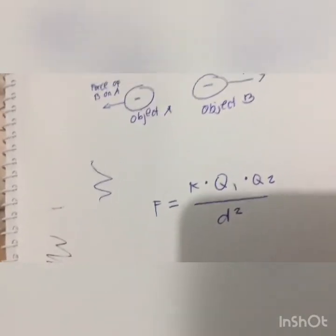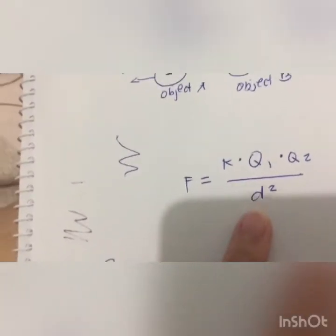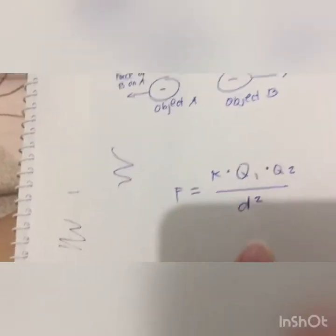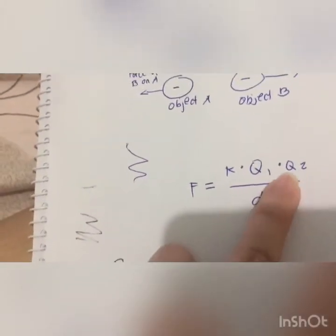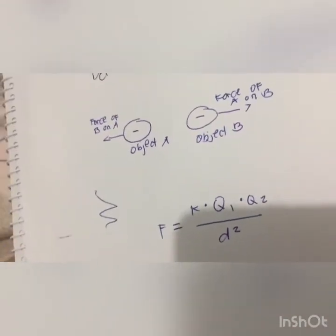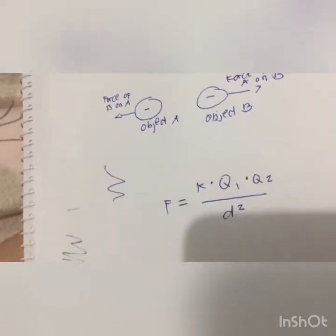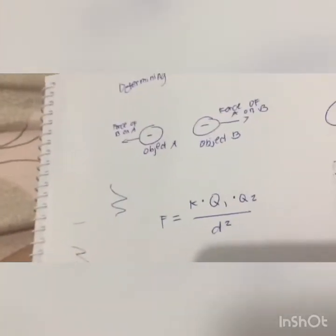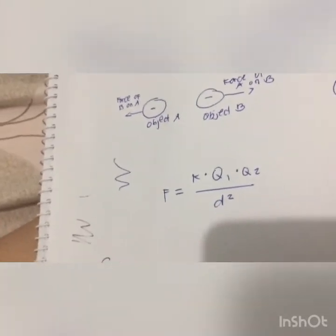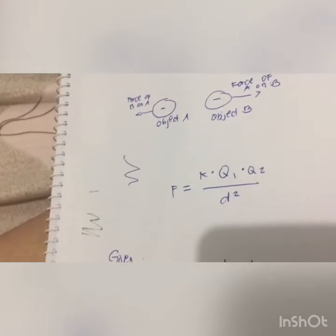Mathematically, the force value would be found to be positive when Q1 and Q2 are of like charge (both positive or both negative), and the force value would be found to be negative when Q1 and Q2 are of opposite charge. This is consistent with the concept that oppositely charged objects have attractive interactions and like-charged objects have repulsive interactions. In the end, if you are thinking consistently and mathematically, you would be able to determine the nature of force — attractive or repulsive — without the use of positive and negative signs in the equation.